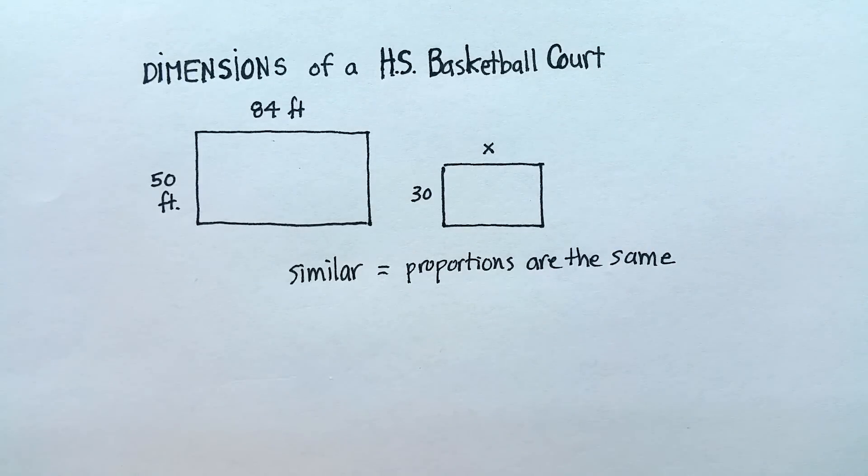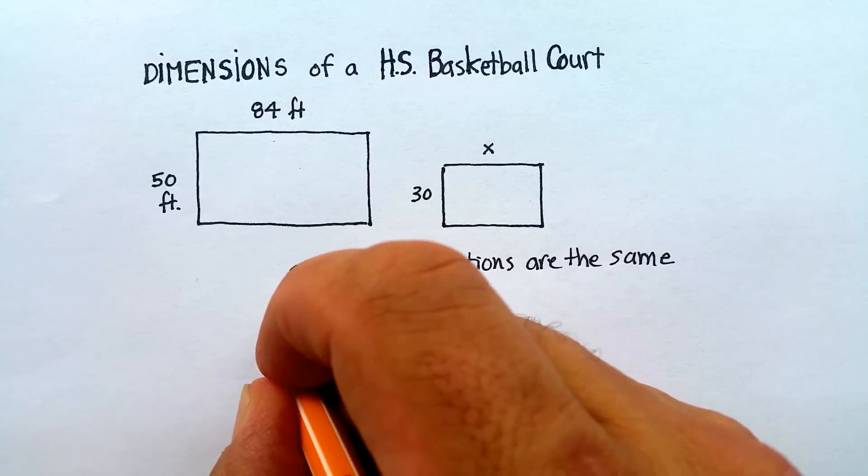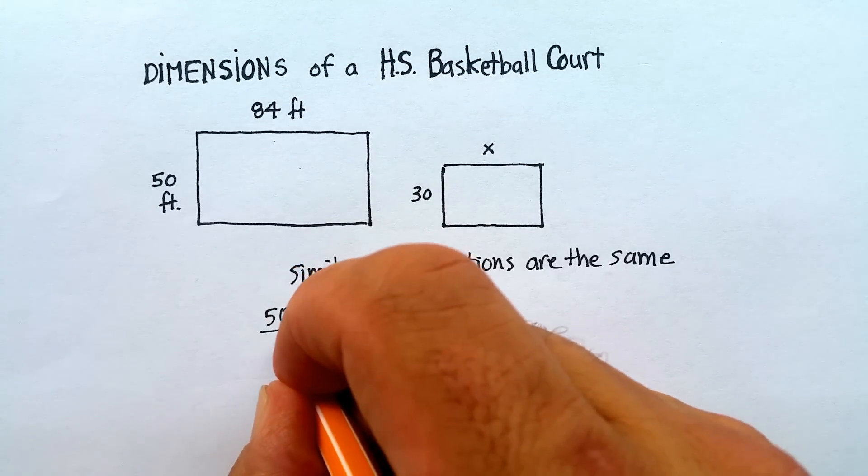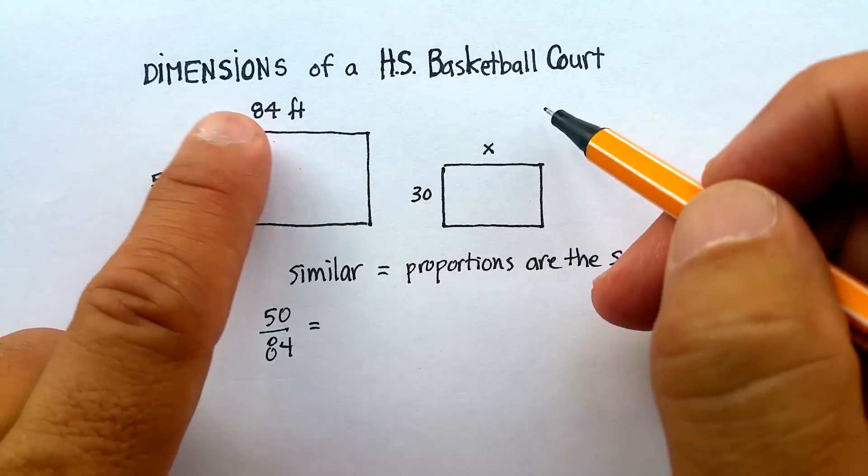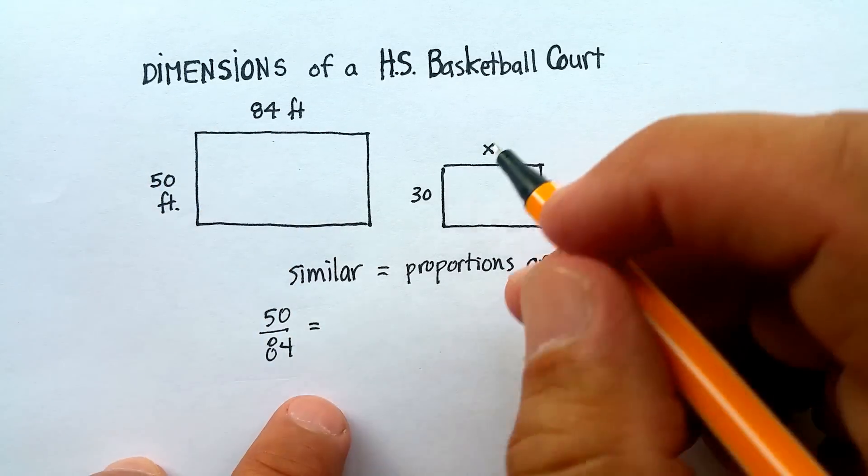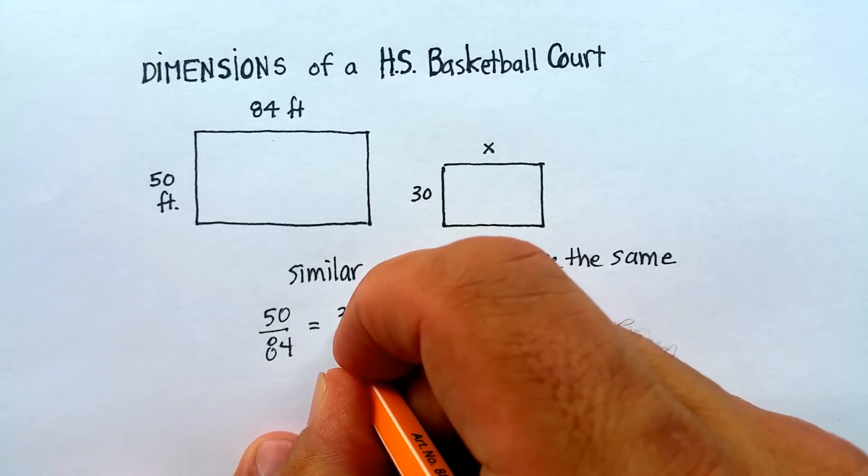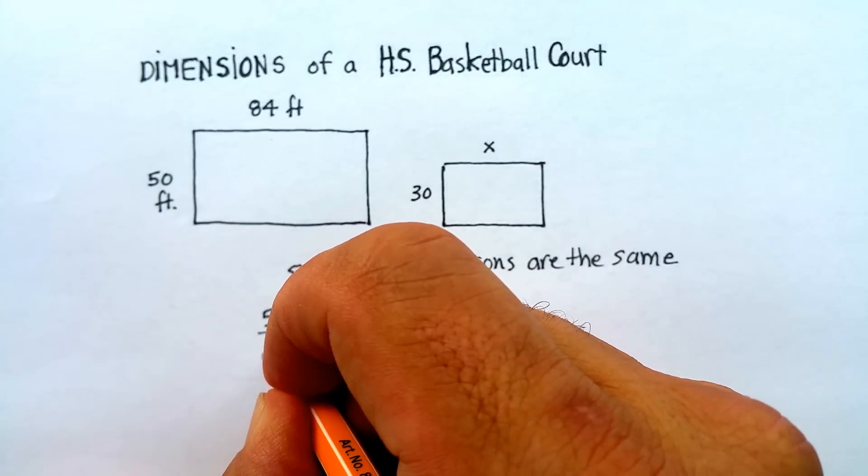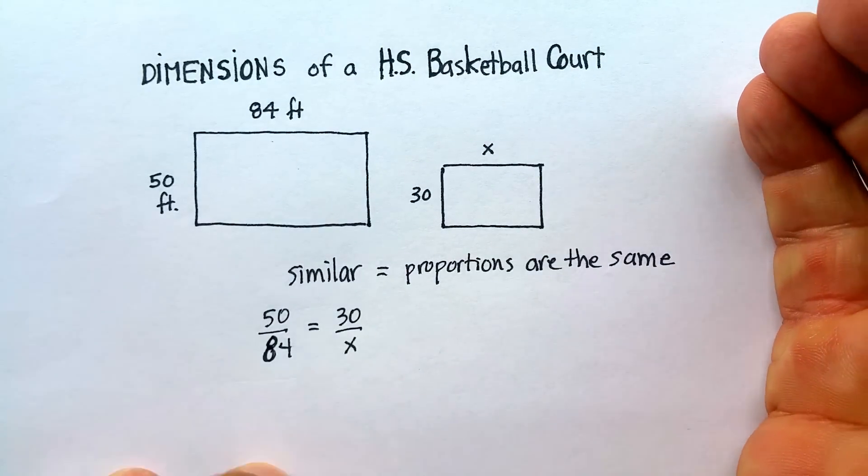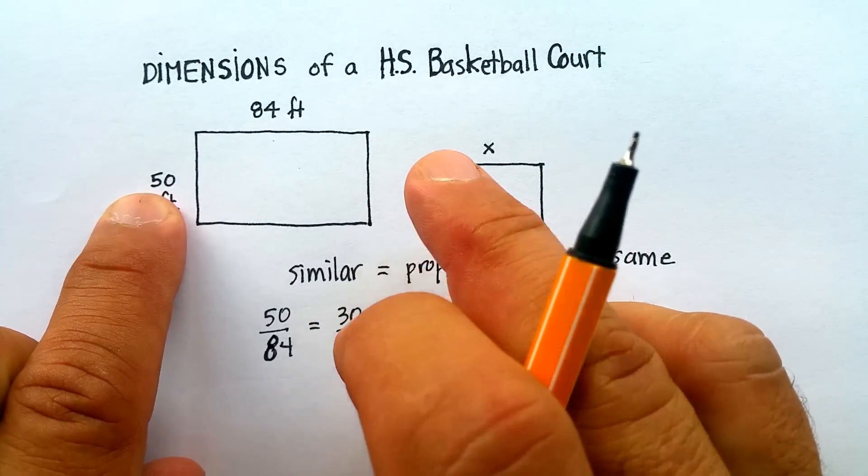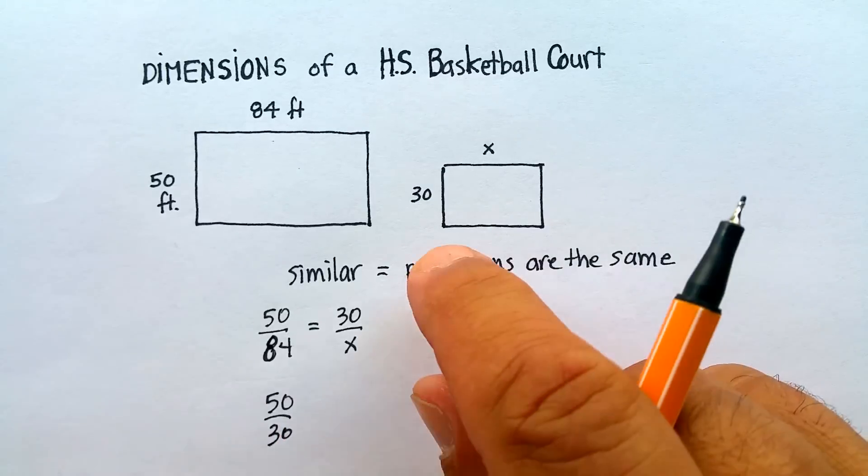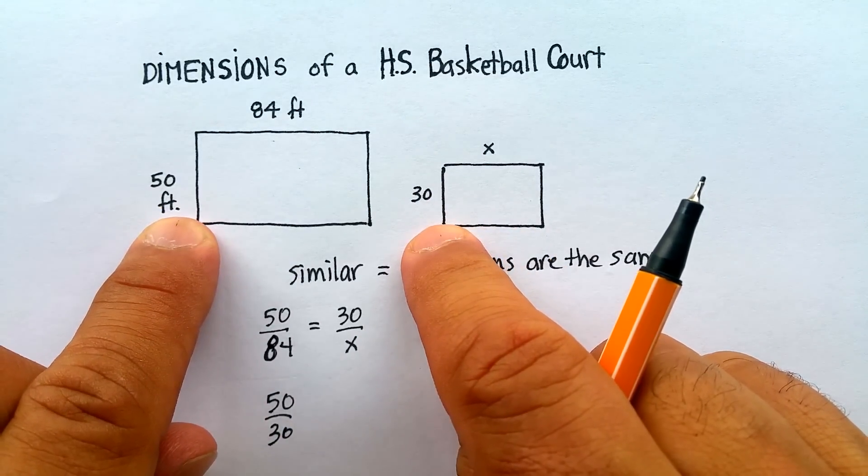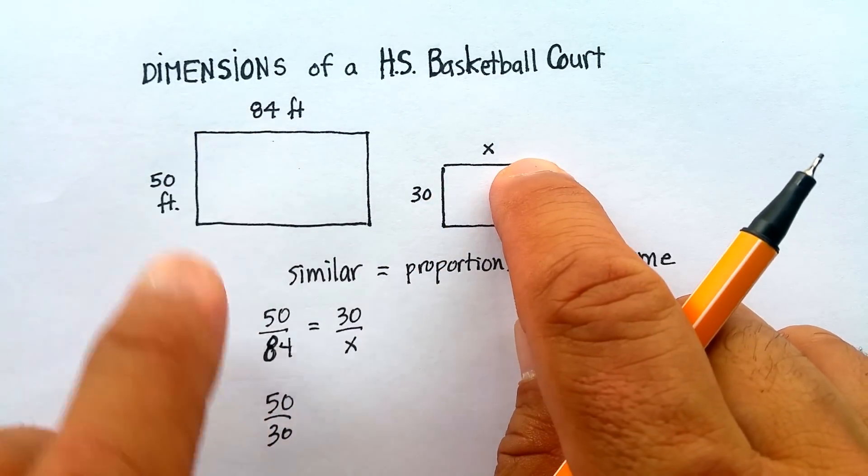Well, you can set up the ratio any way you want. You can say 50 is to 84, and then you have to do the exact same proportions in the exact same manner as 30 is to x. So that's actually one way of doing it. I could also just compare the similar sides. I could say 50 is to 30, and then we'll go ahead and solve this here in just a second. But 50 is to 30, because I'm using the exact same side of my similar figure as 84 is to x.